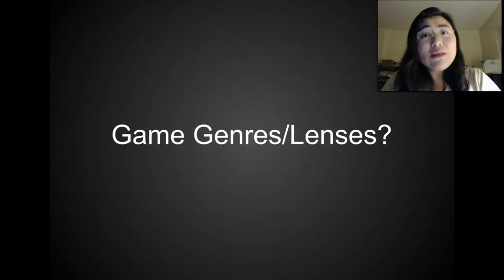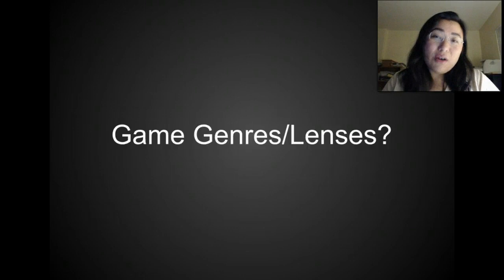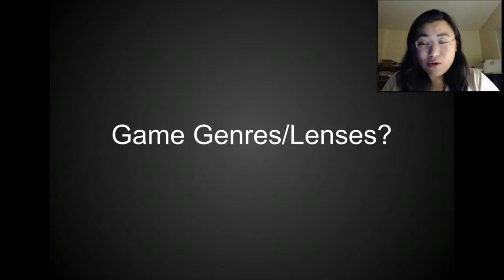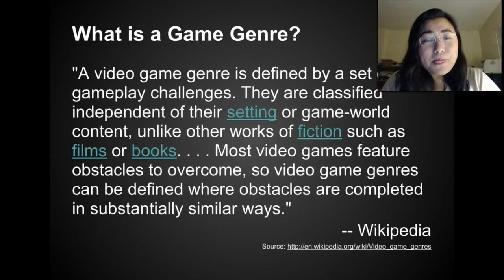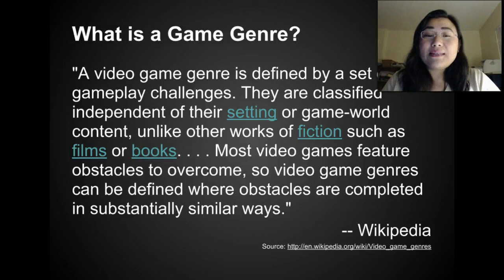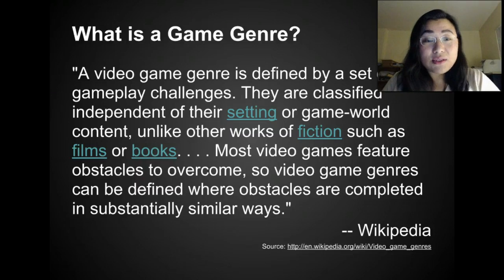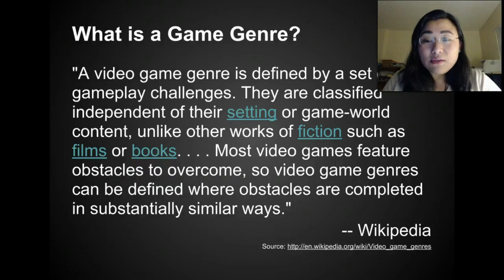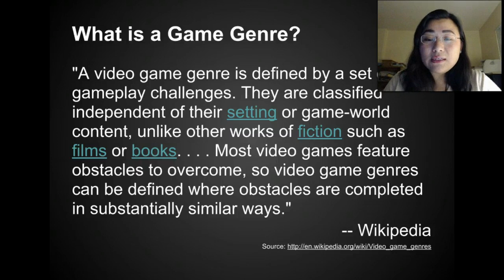What is a game genre? According to Wikipedia, a game genre is defined by a set of gameplay challenges. They are classified independent of their setting or game world content, unlike other works of fiction such as films or books. Most video games feature obstacles to overcome, and video game genres can be defined where obstacles are completed in substantially similar ways.